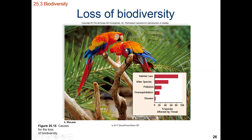For example, macaw parrots are chronically overharvested for the pet trade, but in addition they are also suffering from habitat loss as their native forests are being chopped down. Another cause of harm to the macaw is the introduction of alien species, which means macaws have to compete more now for food resources they normally would have less competition for.